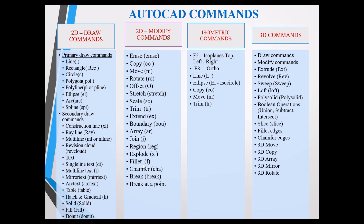Isometric commands are used for drawing objects at a 30-degree angle with three views: top, left, and right. By changing views we can draw objects in isometric. Commands used include Line, Ellipse (using the Isocircle sub-option to draw circles in isometric, since circles cannot be drawn directly), Copy, Move, and Trim.